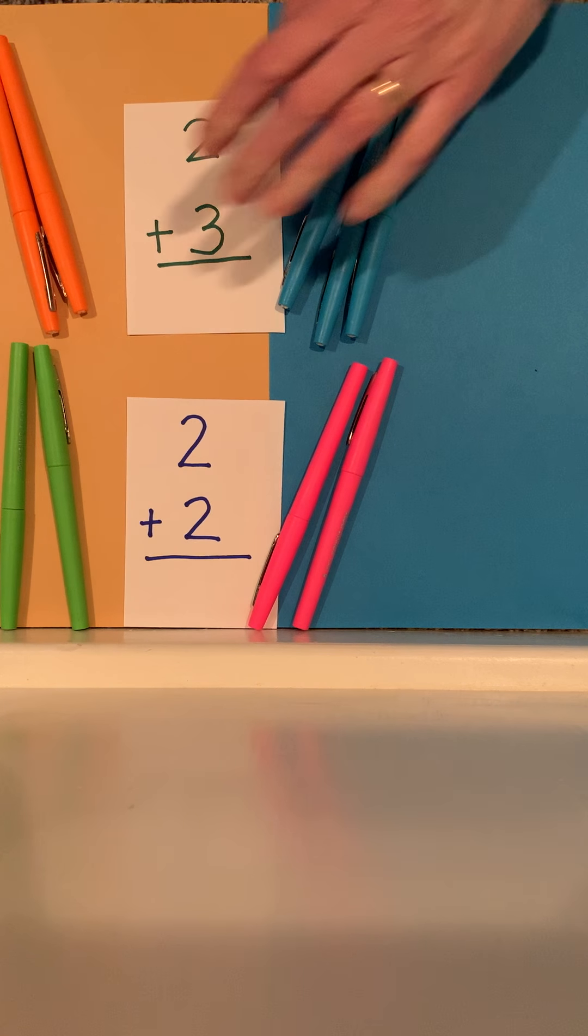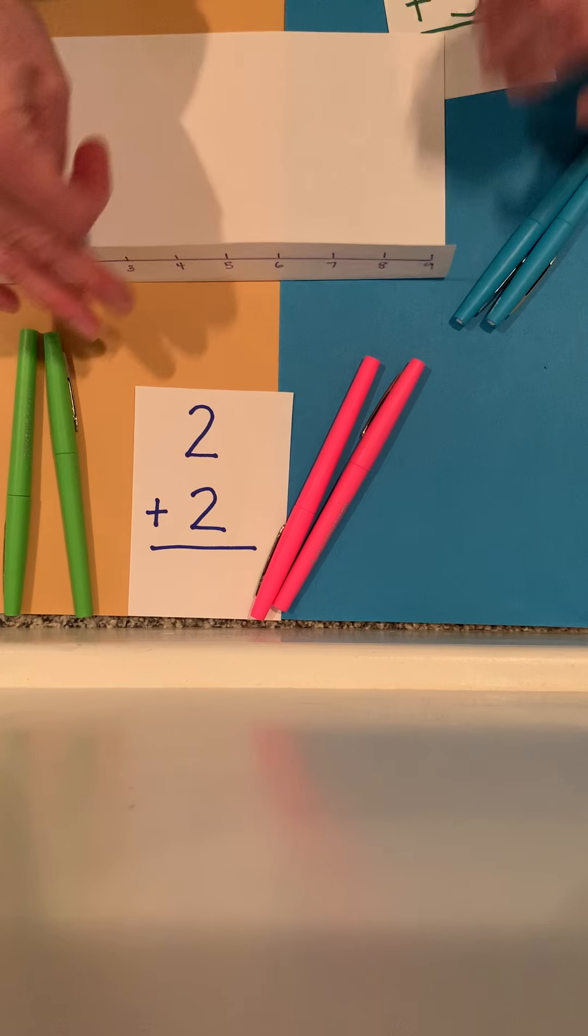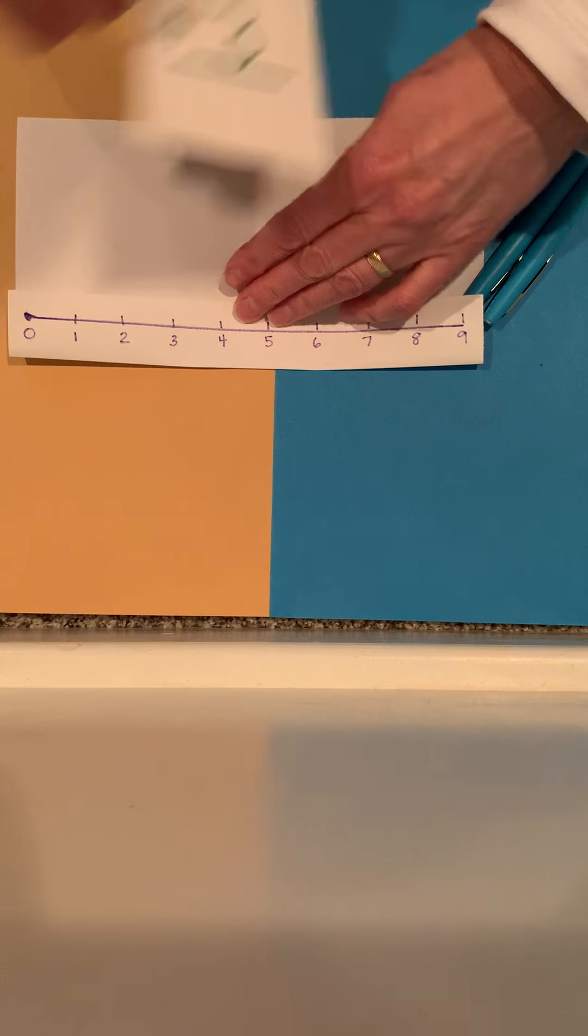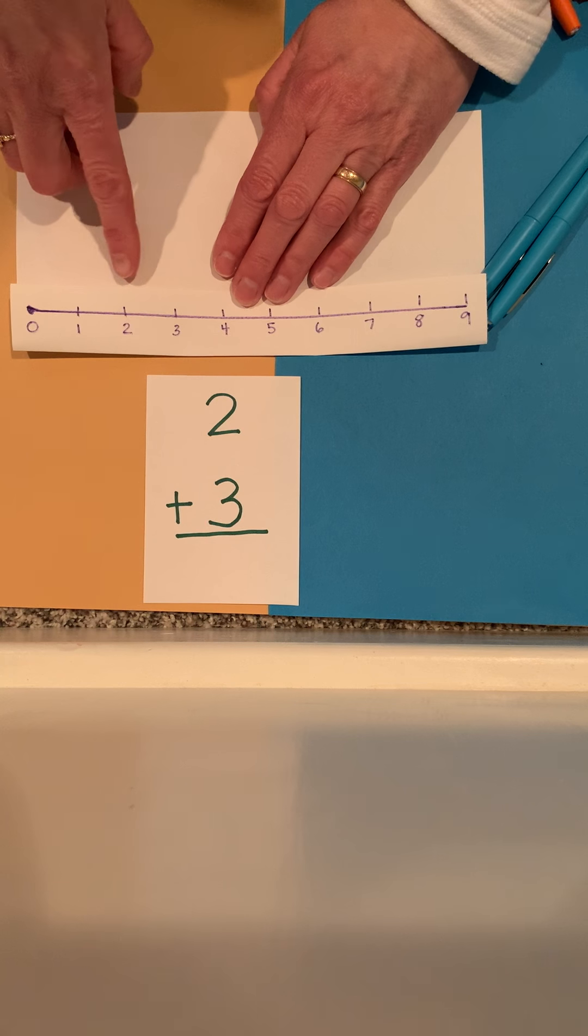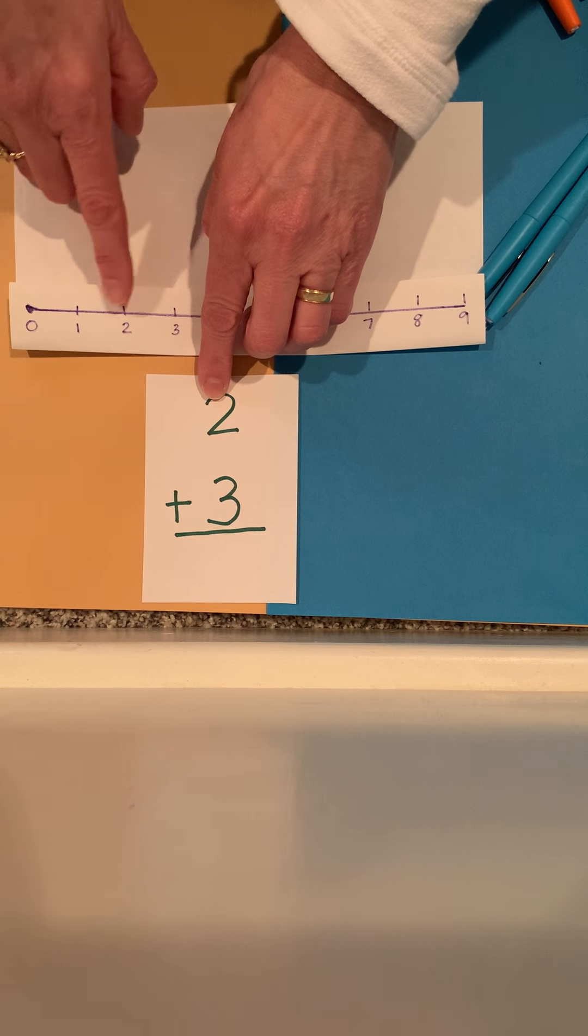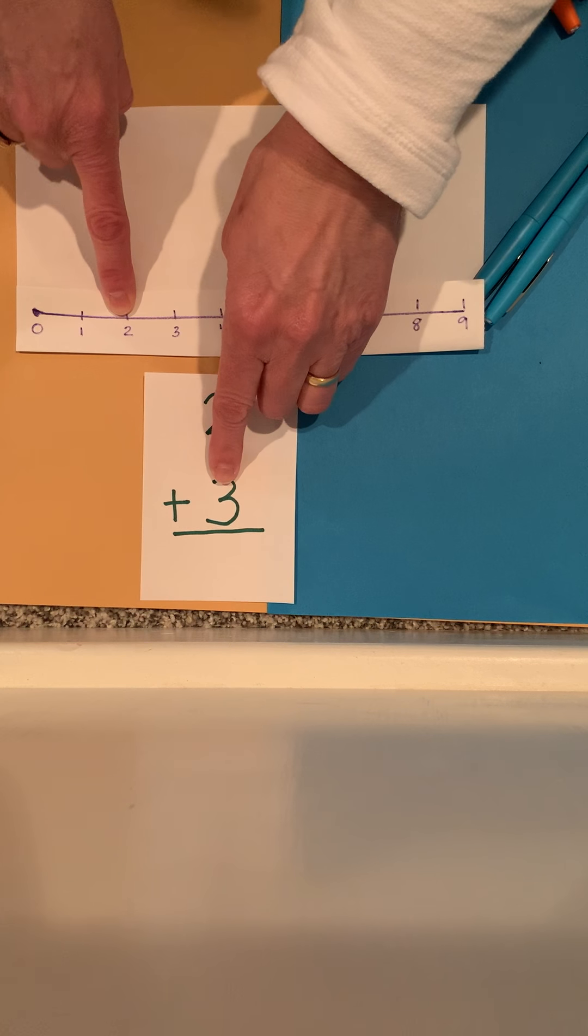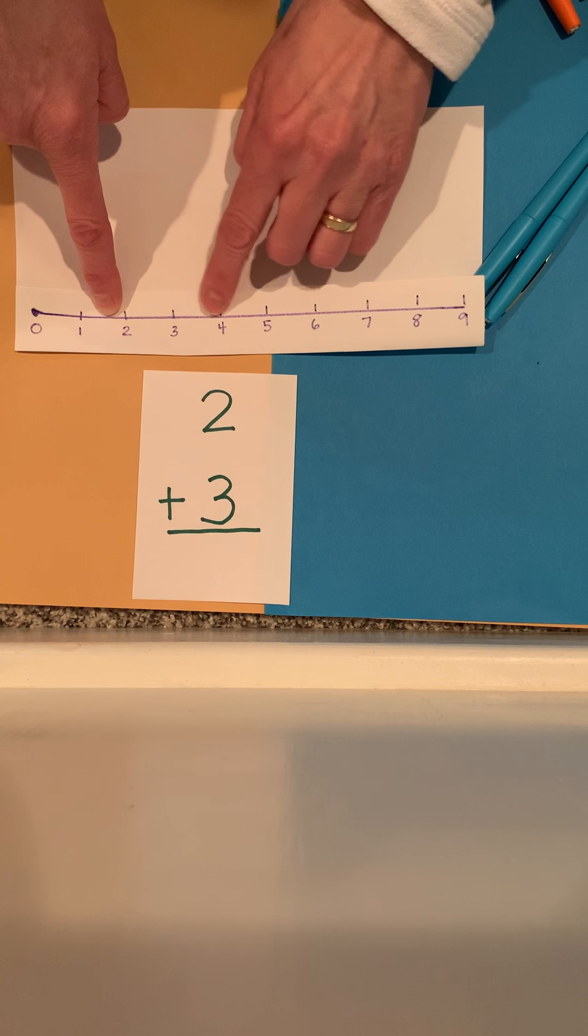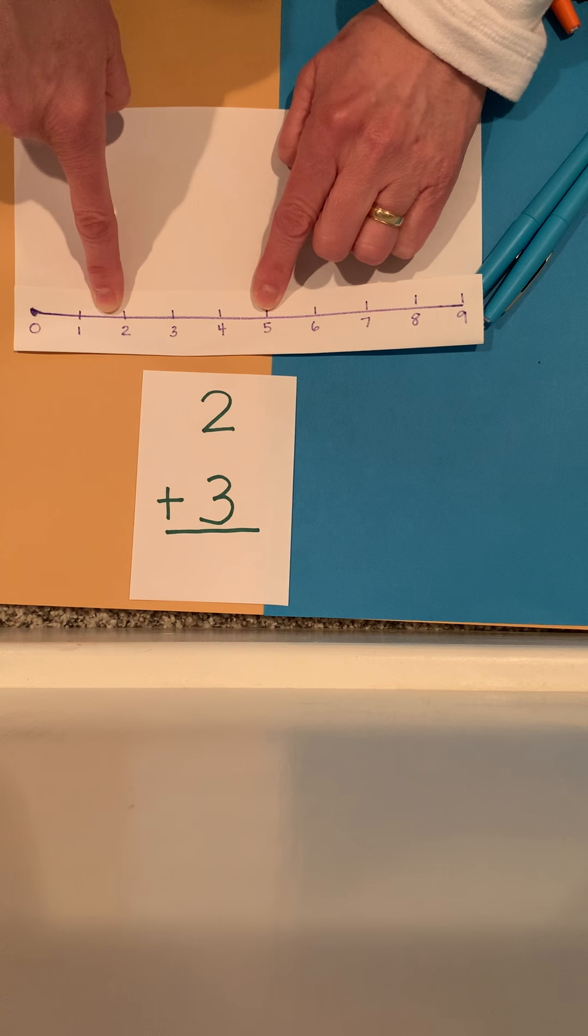If we look at our number line and we start with the number 2 because that's the smaller number and we jump up 3 more. 1, 2, 3, 4, 5.